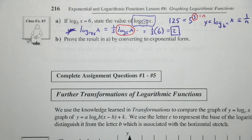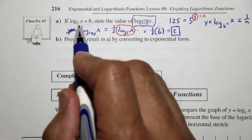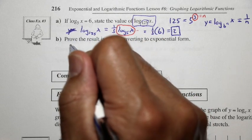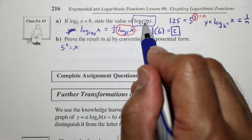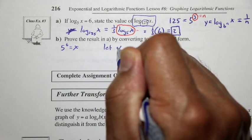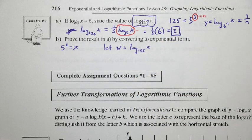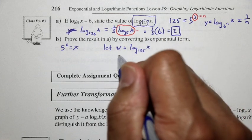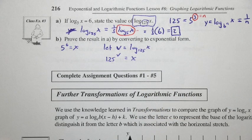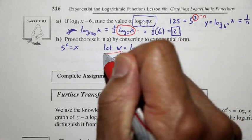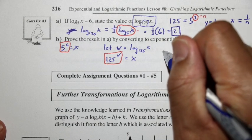Let's prove the result using exponential form. Our strategy is to find two expressions for x and equate them. If log base 5 of x equals 6, then in exponential form, 5 to the 6 equals x. Now let's call the unknown value v, so that log base 125 of x equals v, and converting to exponential form gives us 125 to the exponent v equals x.